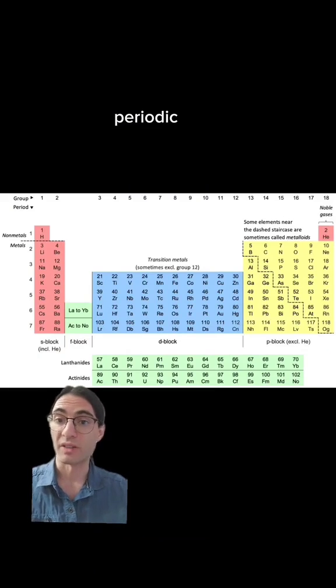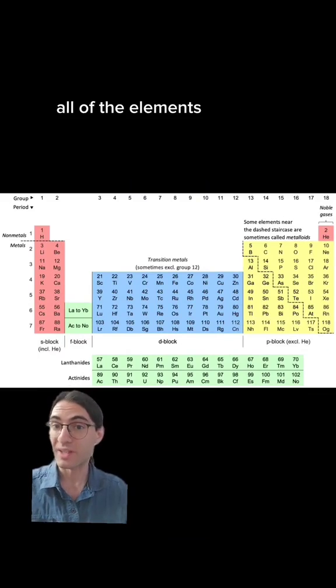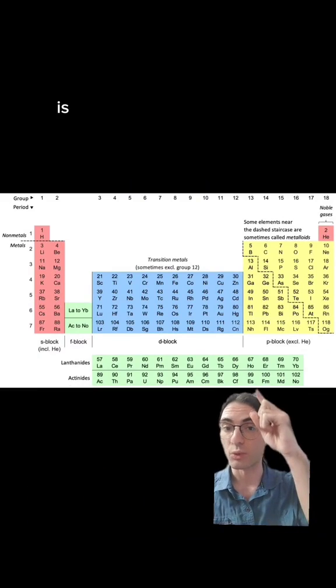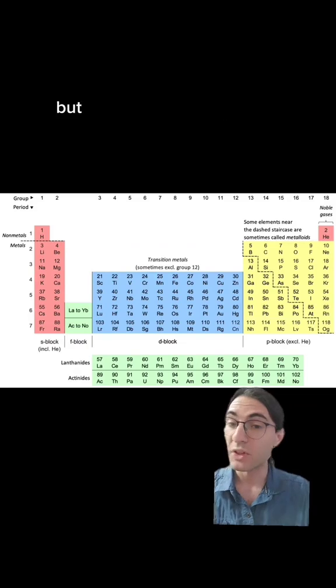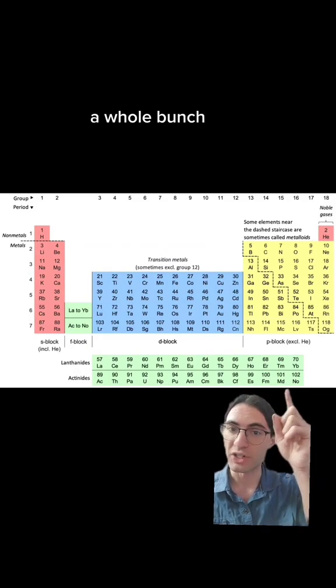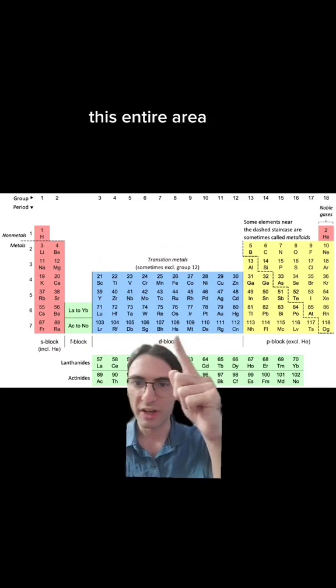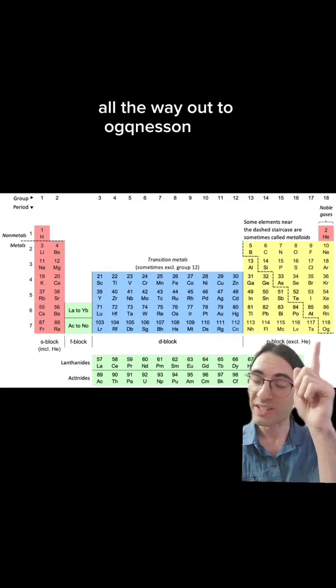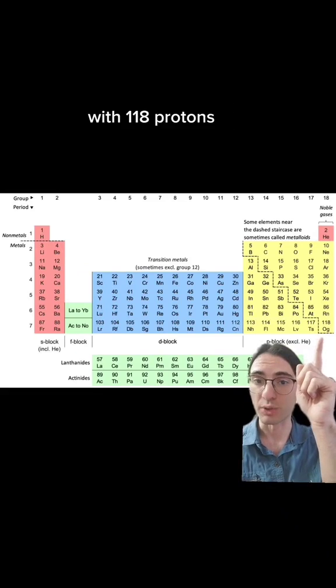This is ye olde periodic table, and we can see all of the elements that have been synthesized. The one I just showed you, Einsteinium, is right there on the periodic table. But there's a whole bunch of other elements that have been synthesized, including fermium, which is one higher, a whole bunch here, this entire area here, all the way out to oganesson here, with 118 protons in it.